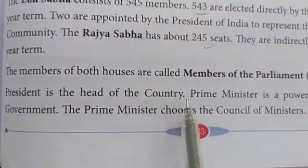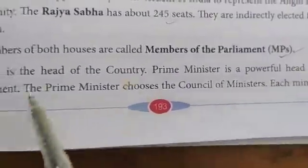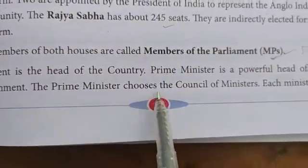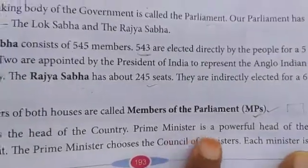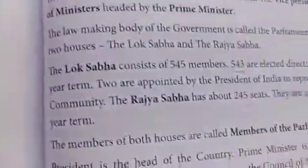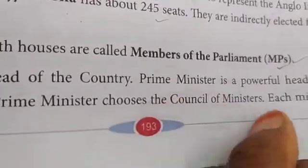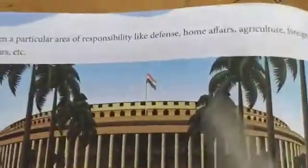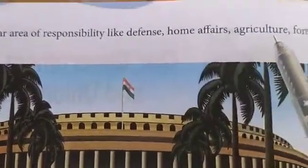President is the head of the country. Prime minister is the powerful head of the government. The prime minister chooses the council of ministers, and each minister is given a particular area of responsibility — such as defense, home affairs, agriculture, foreign affairs, etc.